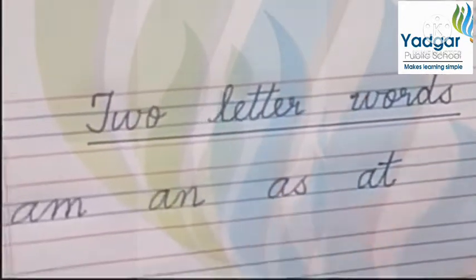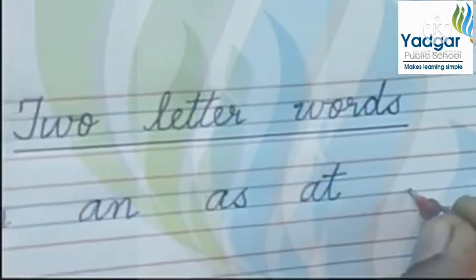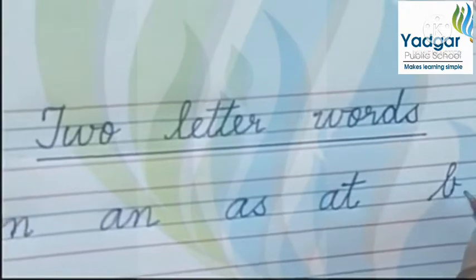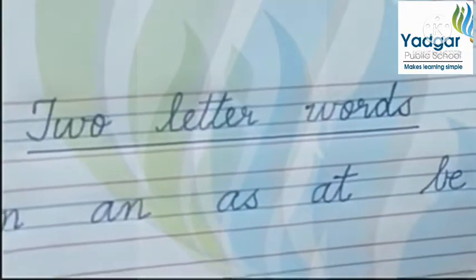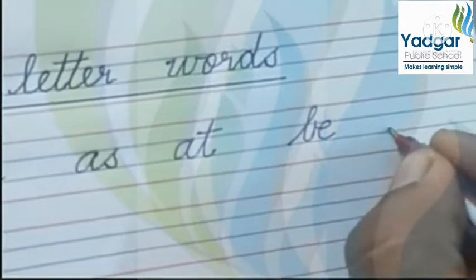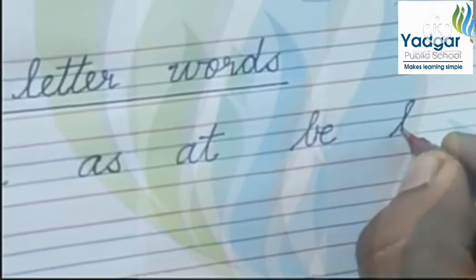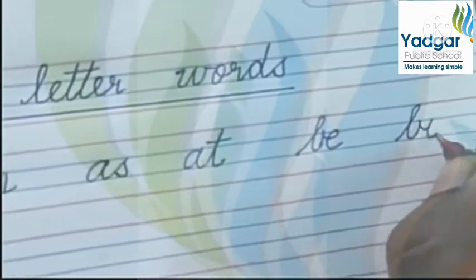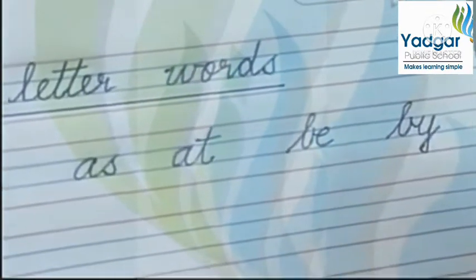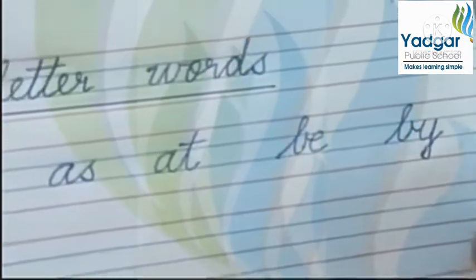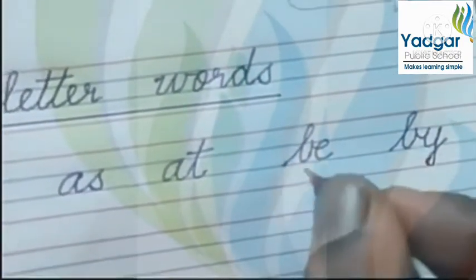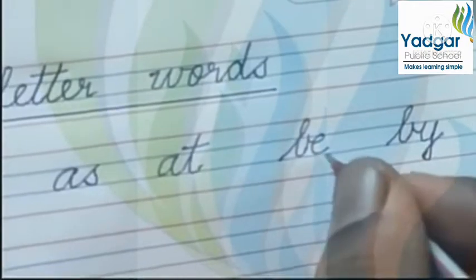Then starting from B, B-E is be, and B-Y is by. See how to write by: B-Y, by. B-E is be.